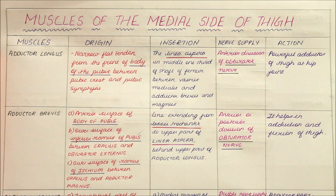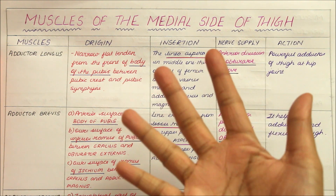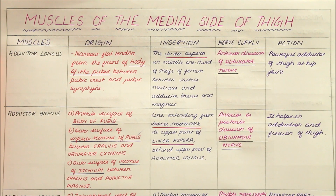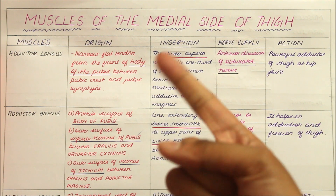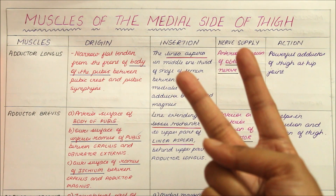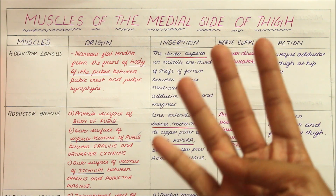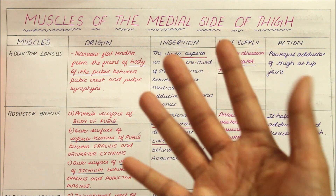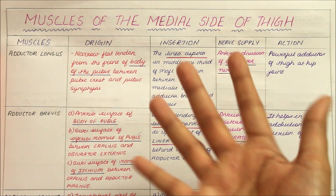Hello guys and welcome back to my channel. In this video we will be learning about the muscles of the medial side of the thigh. As an introduction, we have five muscles of the medial aspect of the thigh: the adductor longus, the adductor brevis, adductor magnus, pectineus, and the gracilis muscles.